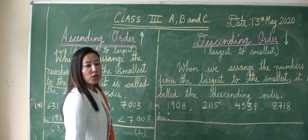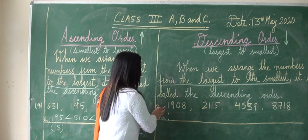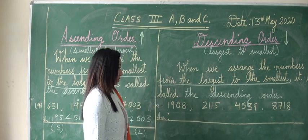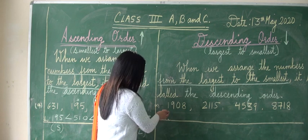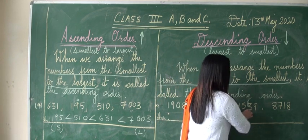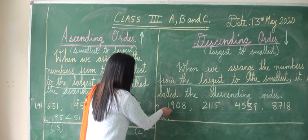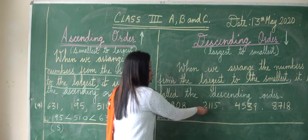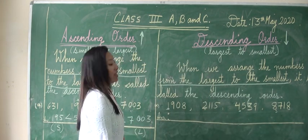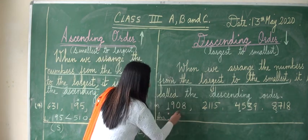Descending order is just the opposite of ascending order. Now look at these numbers — we have to arrange them in descending order. We can see we have a four-digit number, four-digit number, four-digit number, and four-digit number. Compare the first digits: here is 1000, 2000, 4000, and 8000. We have to start with the largest number, so 8718 is the largest number here.